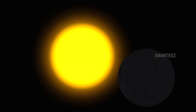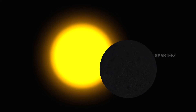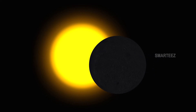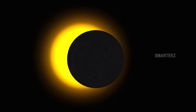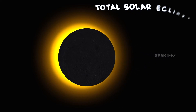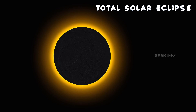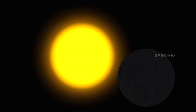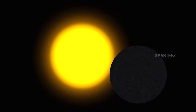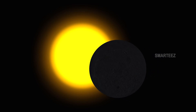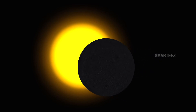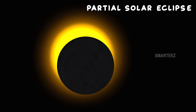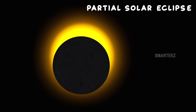In some areas of the earth, the sun can be completely hidden behind the moon. This is called total solar eclipse. Total solar eclipse looks like this. In some areas of the earth, the sun is visible partially. This is called partial solar eclipse. That's how we experience solar eclipse, duckies.